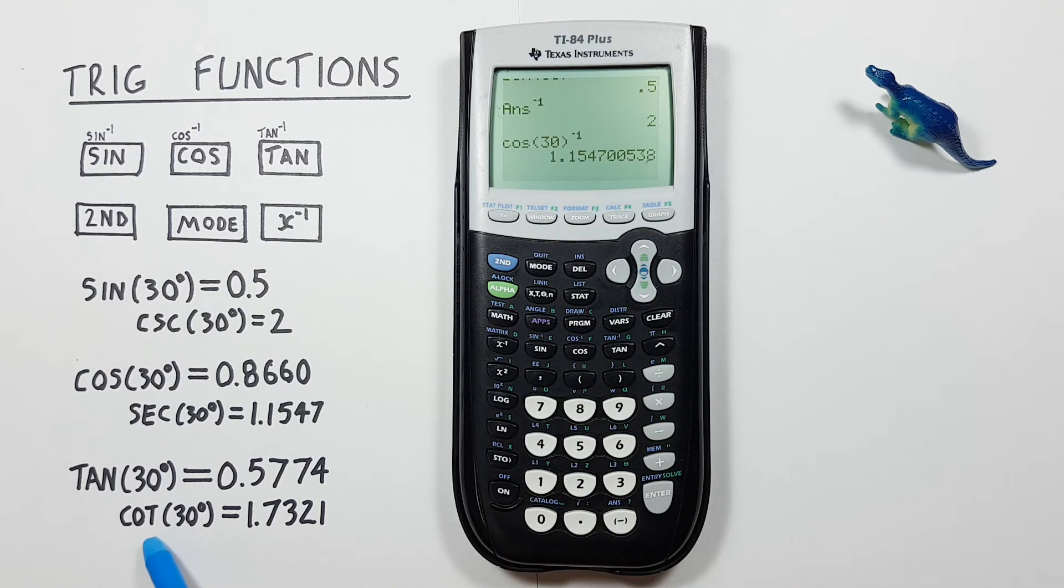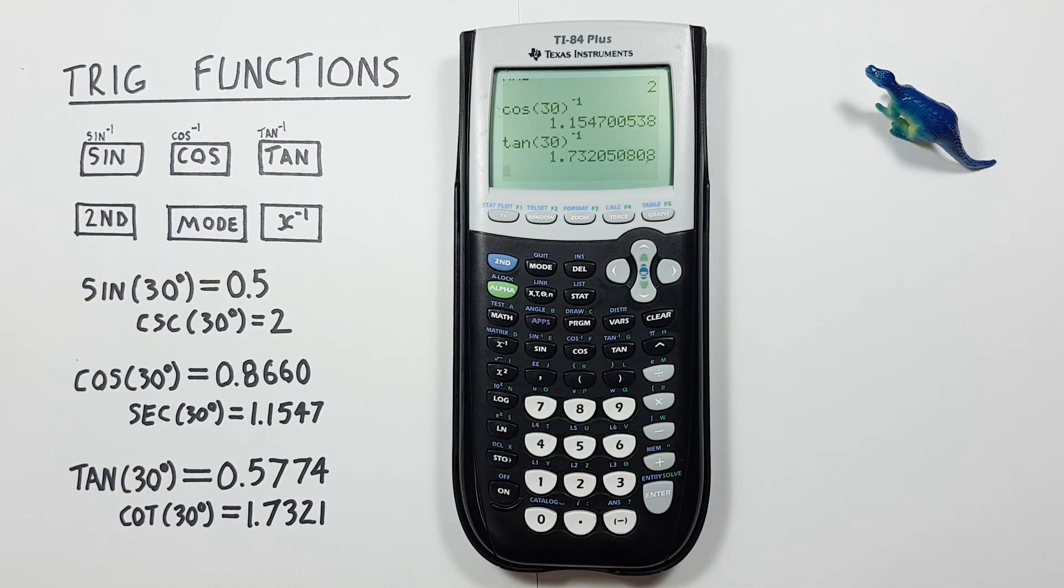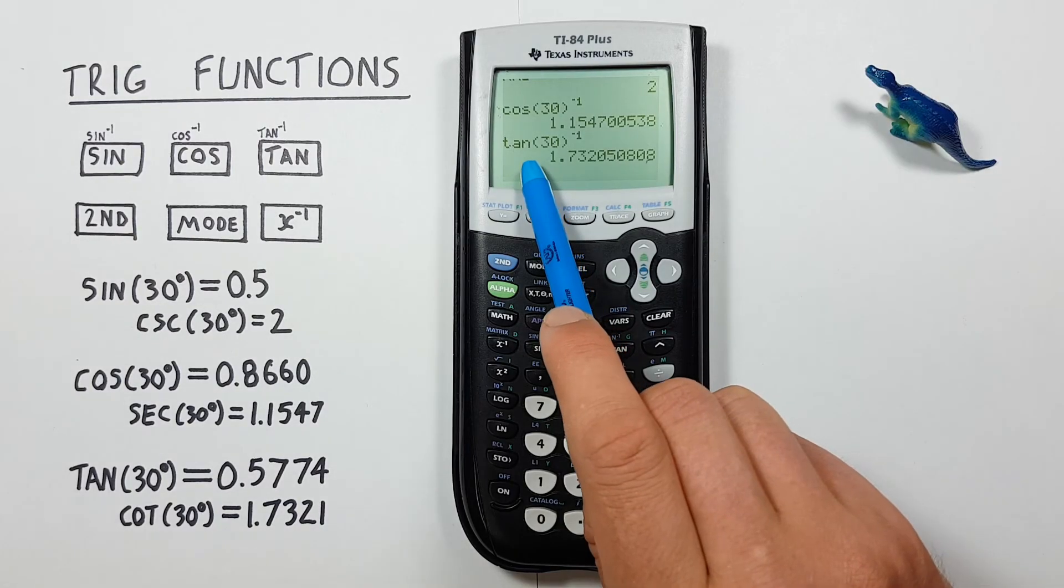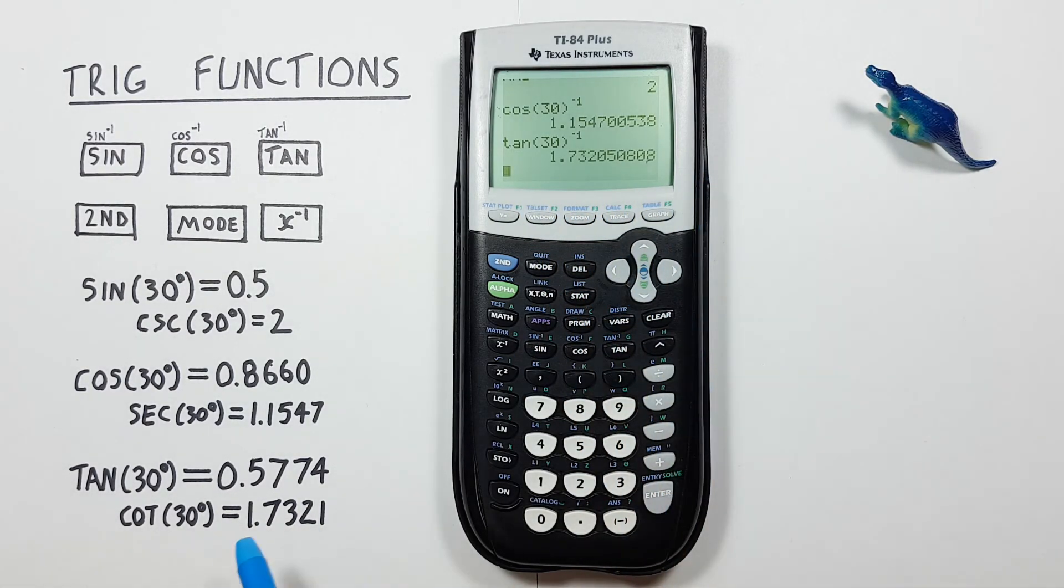And for cotangent we use tan. So again, tan of 30, close our bracket, inverse, press enter. And we see we get cotangent of 30 is equal to 1.7320, etc., or rounded to 1.7321.